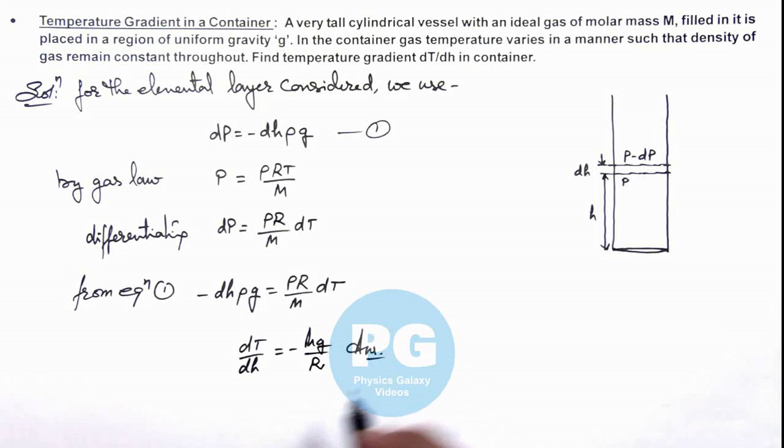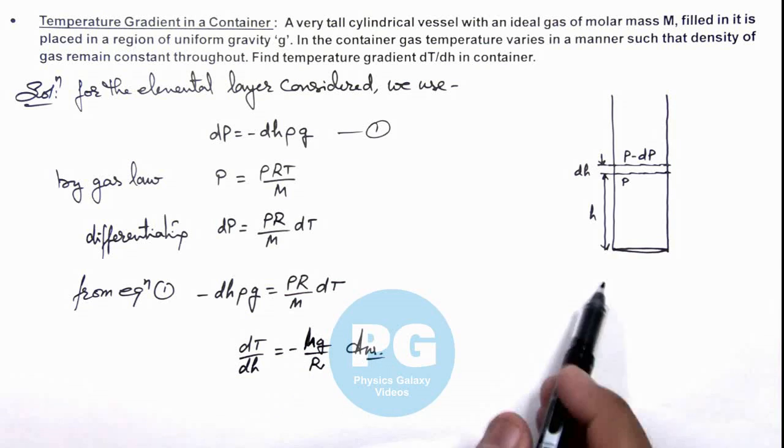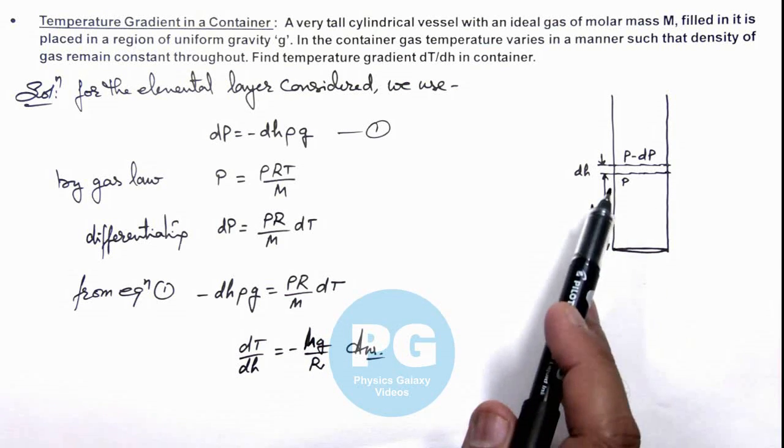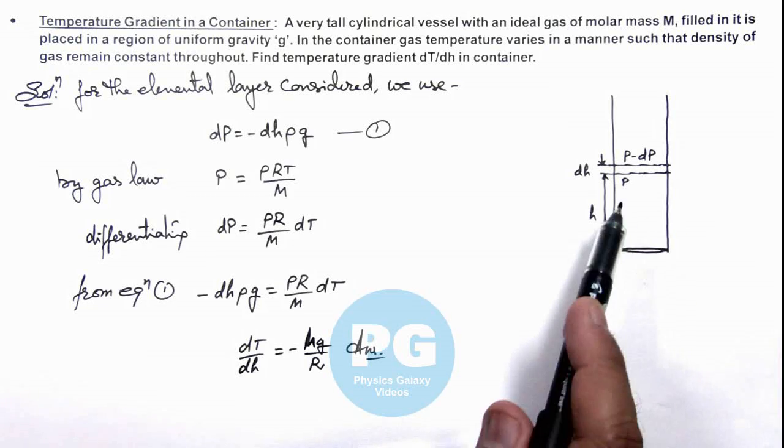Here you can see the temperature gradient is a negative quantity, that means as we move above from the bottom, as we move away from the bottom, the temperature decreases.